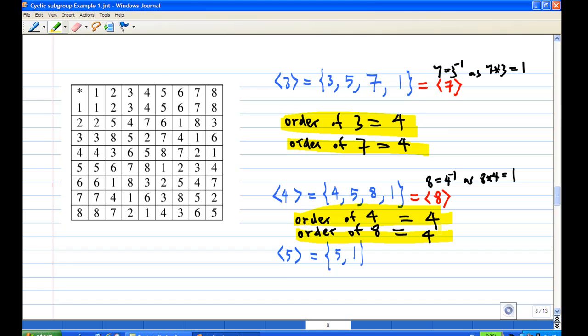And finally, the cyclic subgroup generated by 5 consists of 2 elements, 1 and 5. So the order of 5 is equal to 2, since there are 2 elements inside there. This will conclude all the orders of each element in this group G.